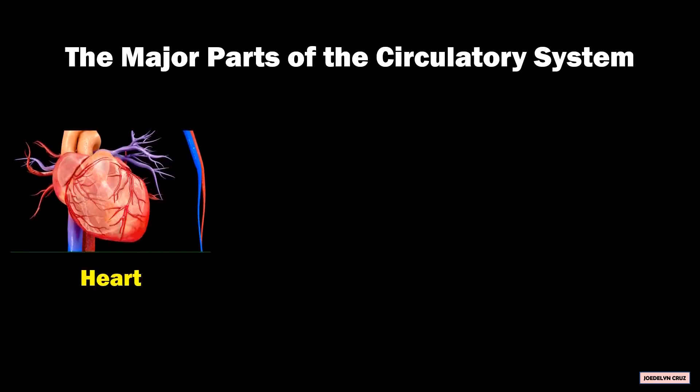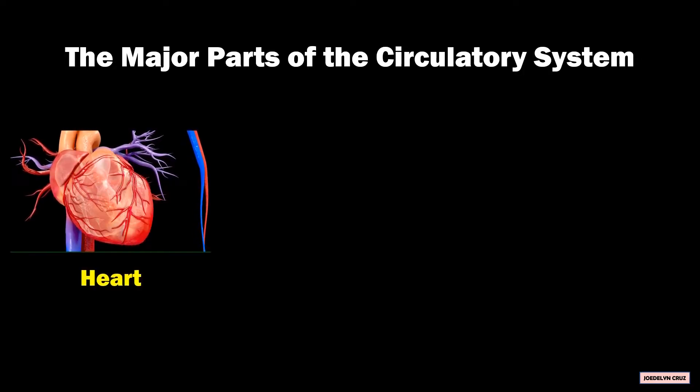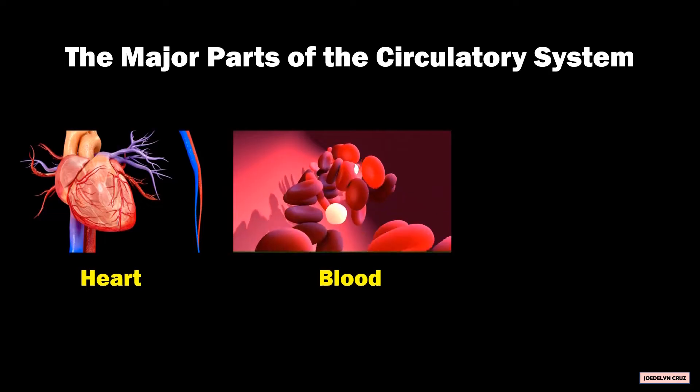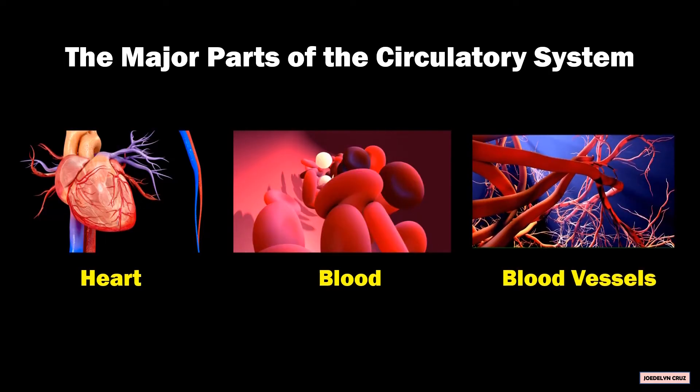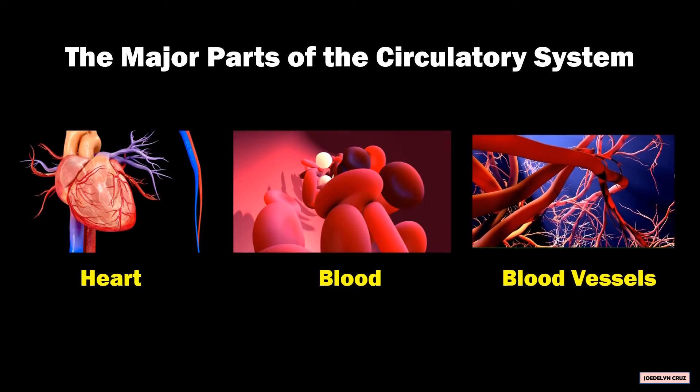The major parts of the circulatory system are the heart, the blood, and the blood vessels.